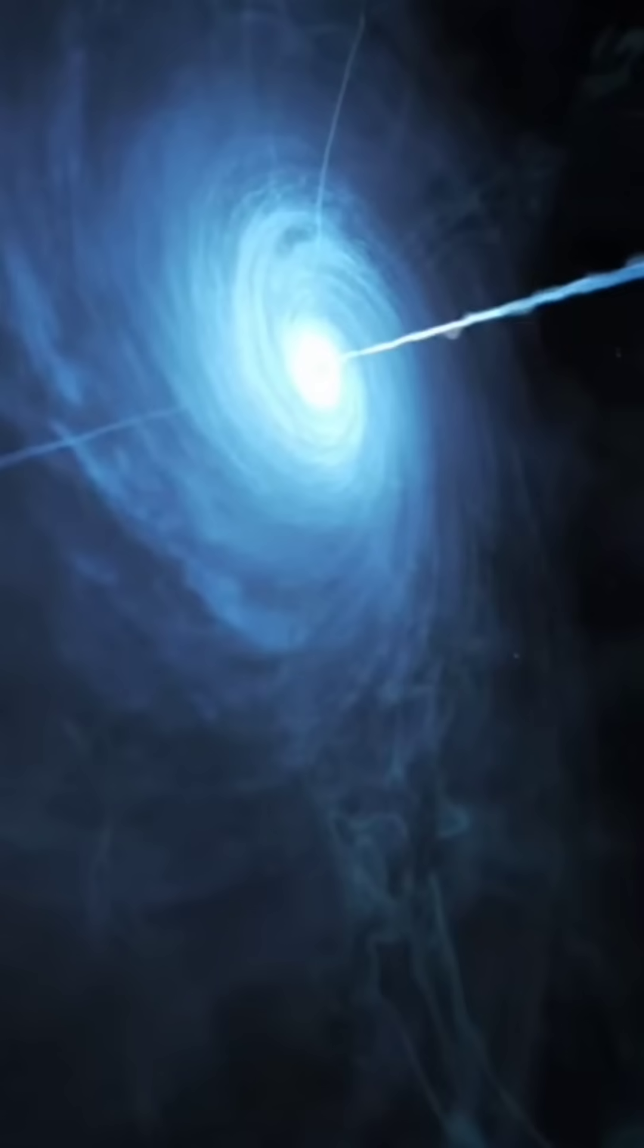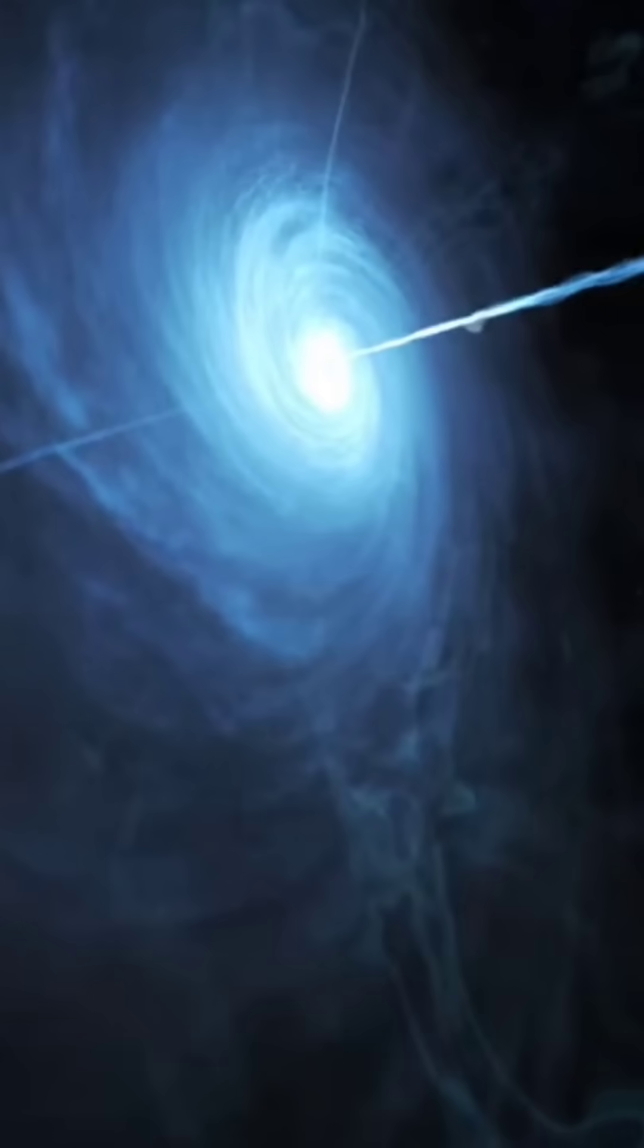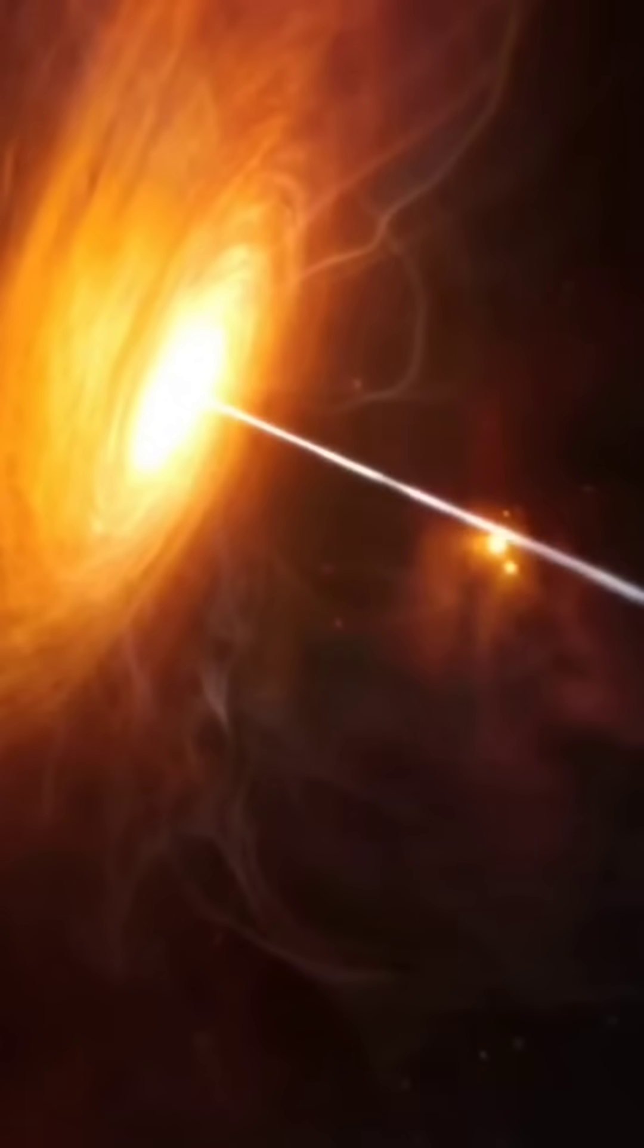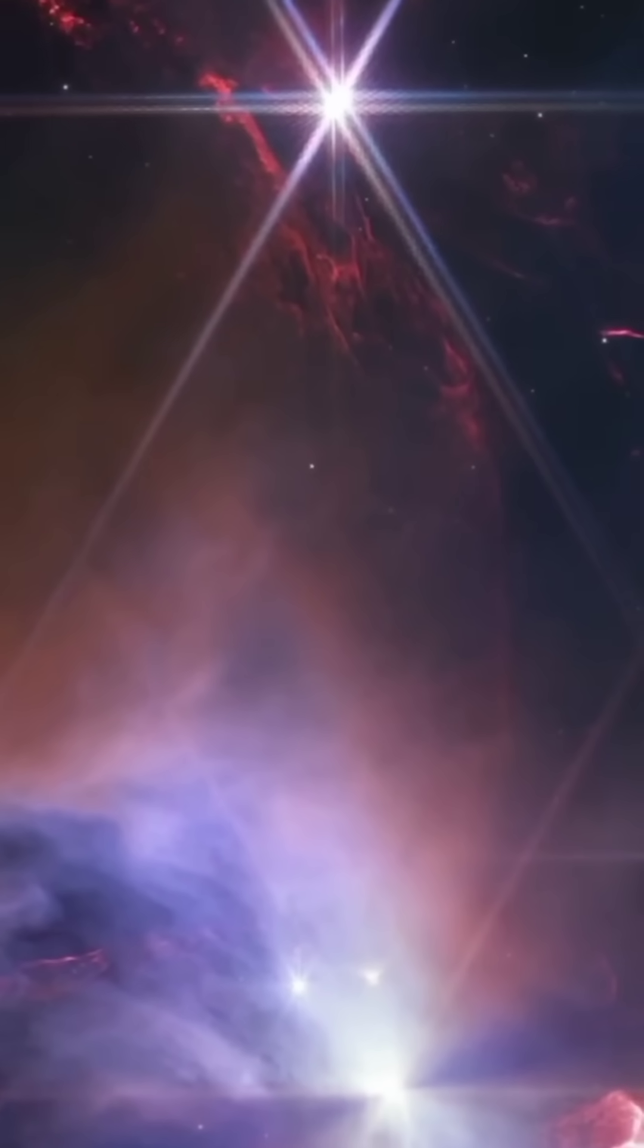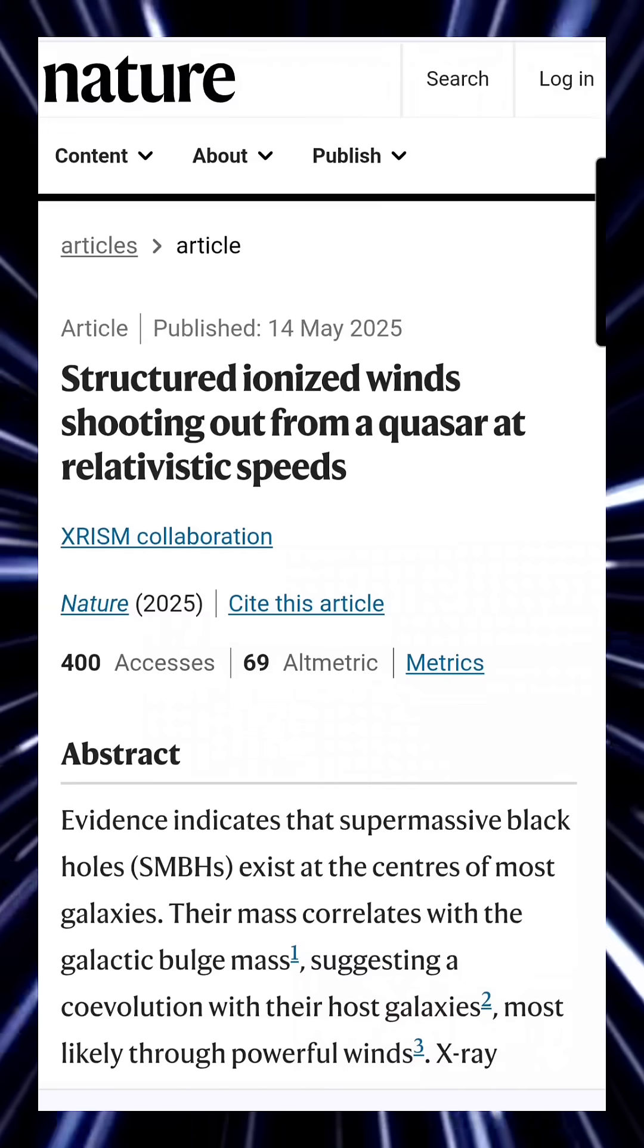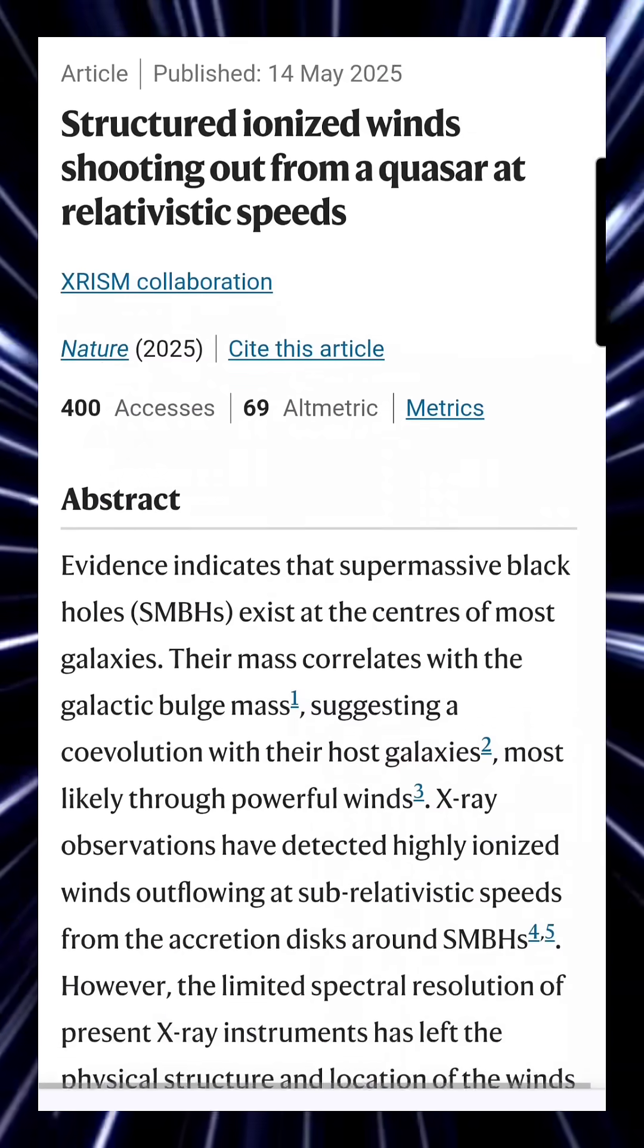They've spotted a supermassive black hole violently firing blobs of gas like cosmic bullets. These aren't slow drifts of dust. These cosmic bullets are being ejected at speeds of 20 to 30% the speed of light.